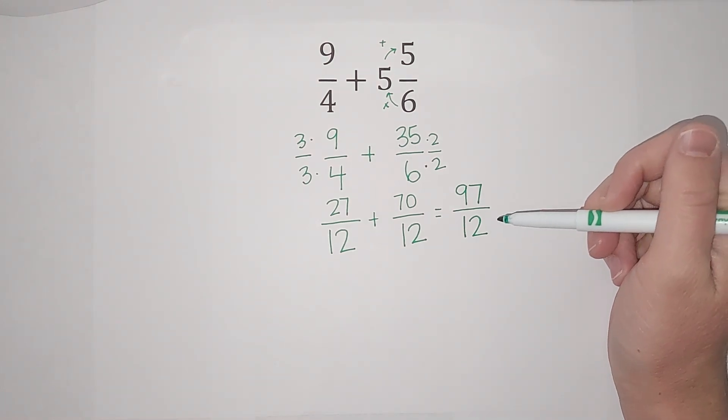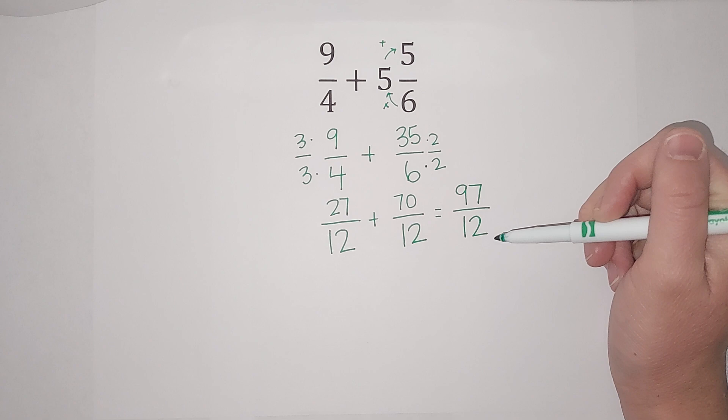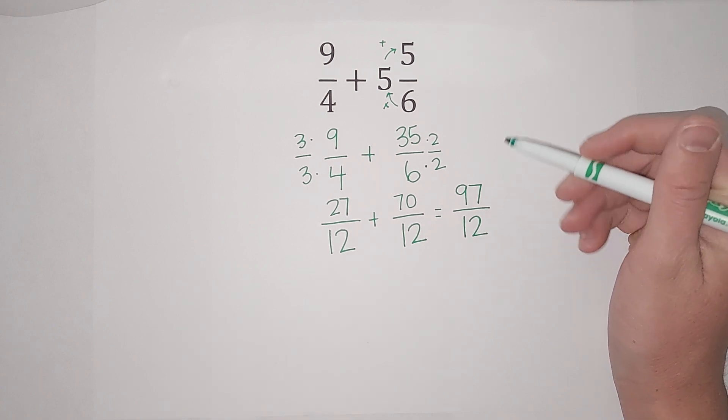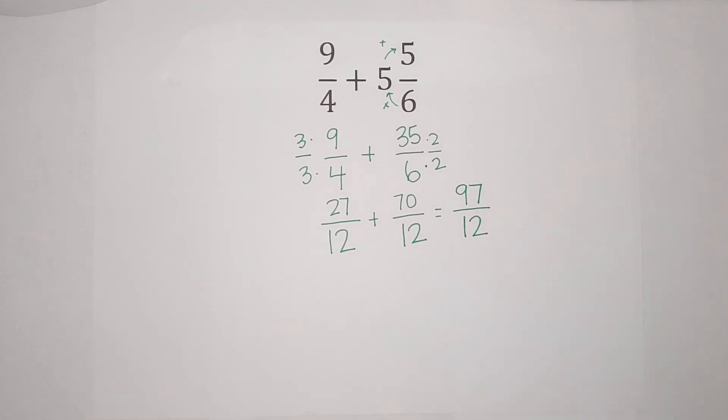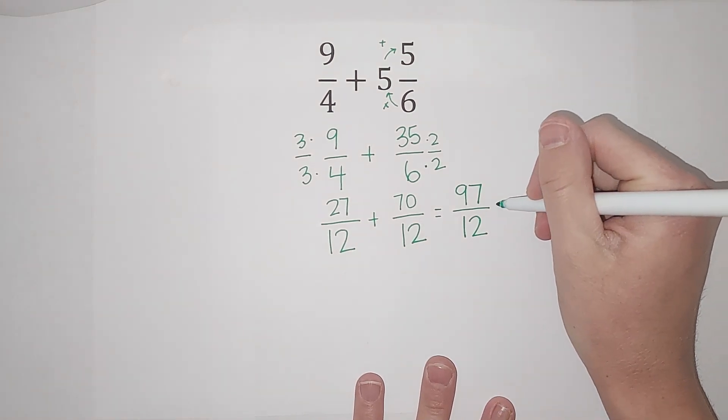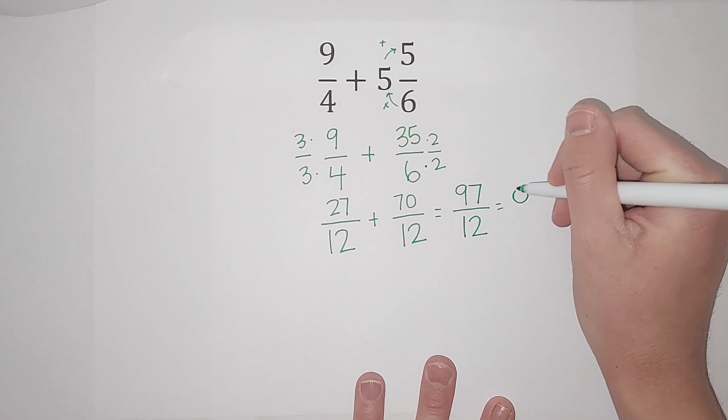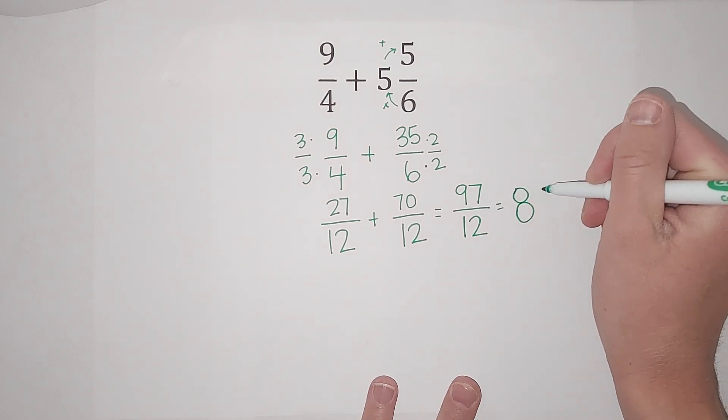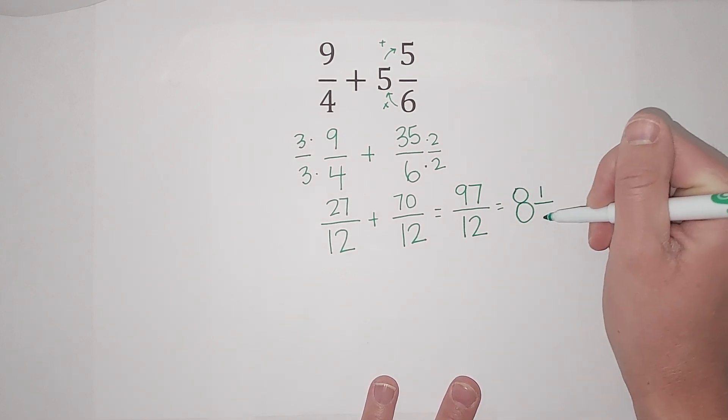So what I ask myself is how many times does 12 go into 97? And I know that 12 times 8 is 96. So it goes in 8 times.